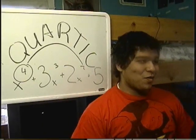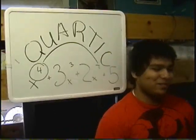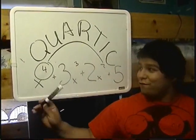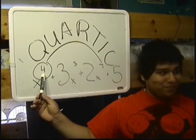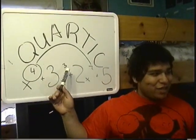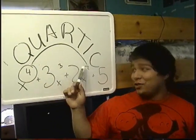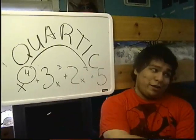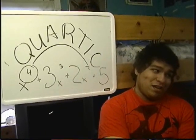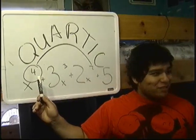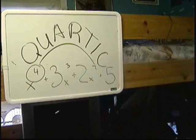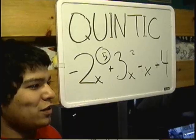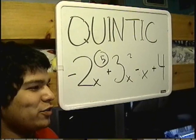A quartic polynomial has a degree of four — not three like cubic, not two like quadratic, not one like linear, but four. Quintic polynomials have degrees of five.